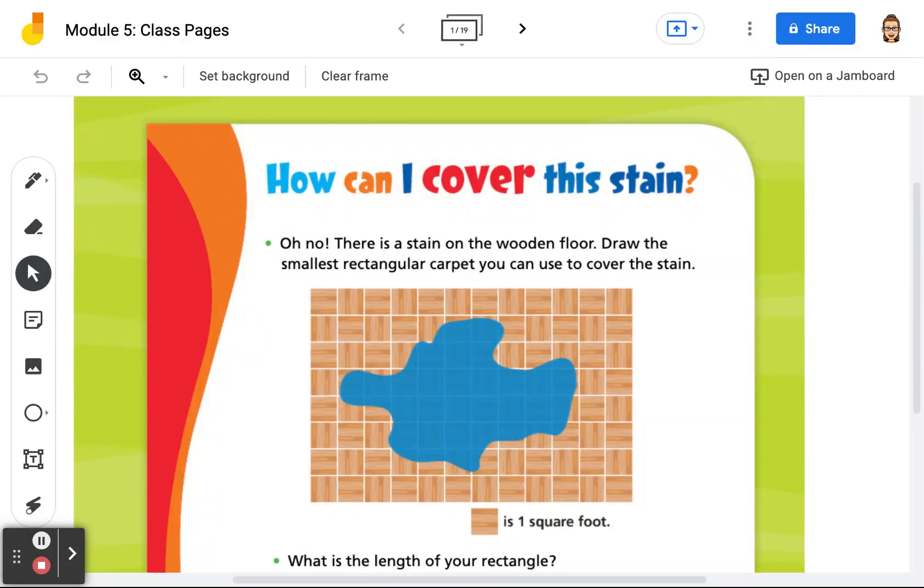So if we look at the question here, it says how can I cover this stain? Oh no, there is a stain on the wooden floor. Draw the smallest rectangle carpet you can use to cover the stain.